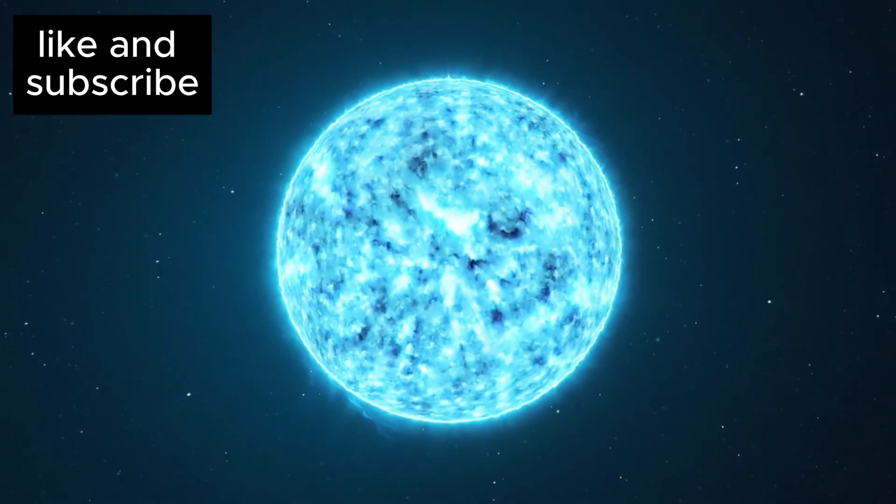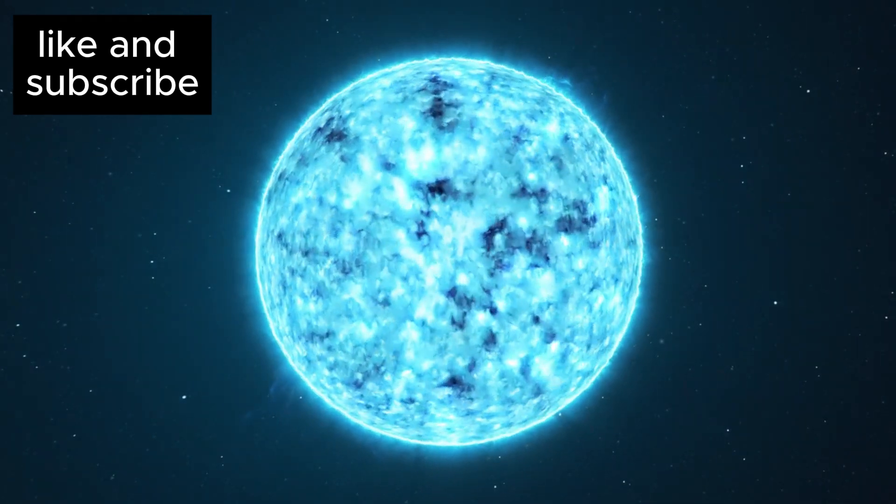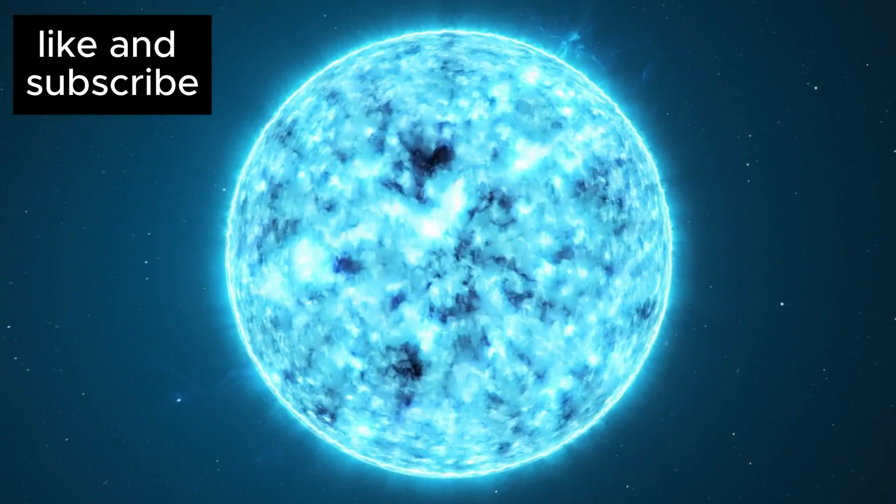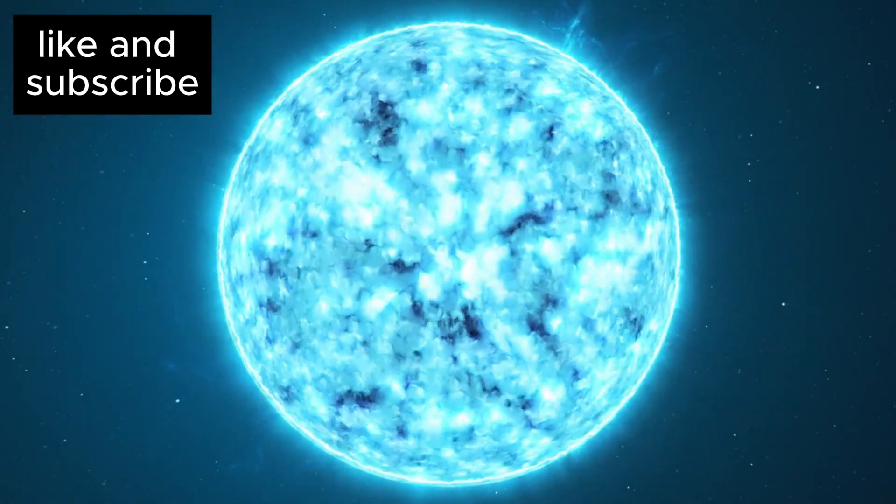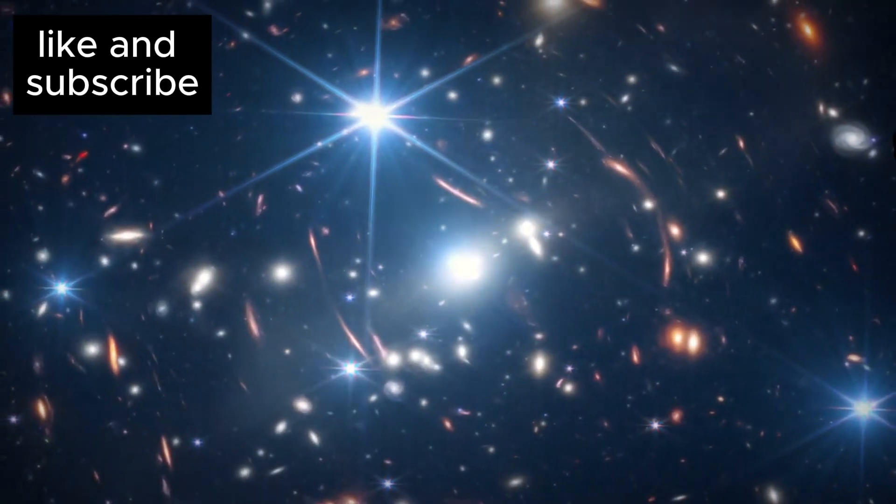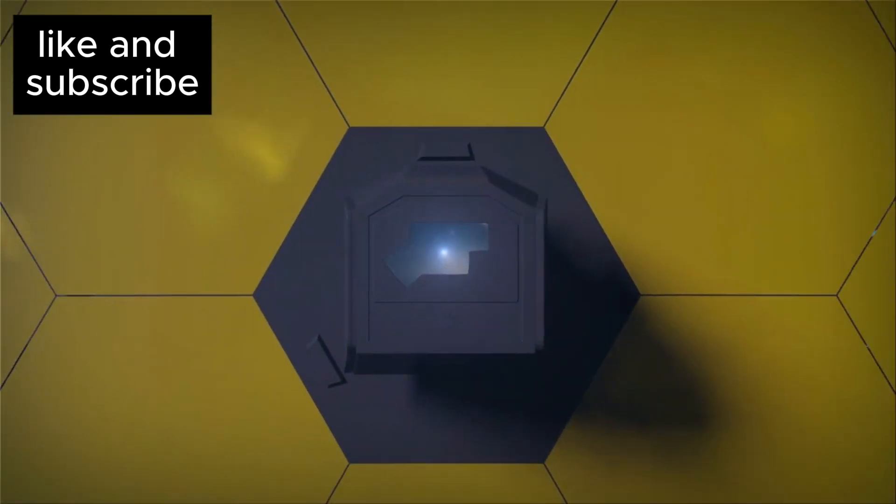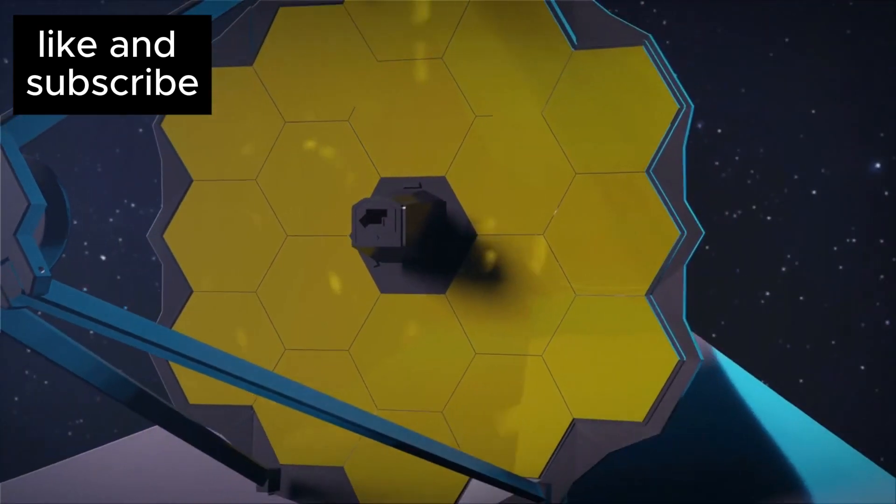This super-Earth, roughly 1.5 times the size of our planet, orbits a small, cool, reddish star that's much dimmer and cooler than our Sun. But the real star of this discovery is the technology that made it possible, the James Webb Space Telescope, JWST.